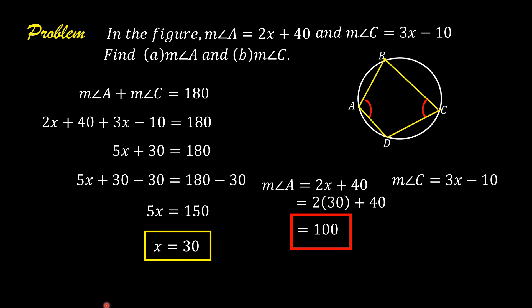The measure of angle C is 3x minus 10. Substituting 30 for x, we have 3 times 30 minus 10. 3 times 30 is 90, and 90 minus 10 is 80. So, the measure of angle C is equal to 80.